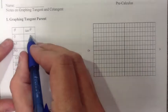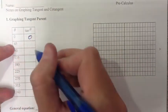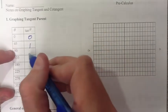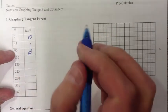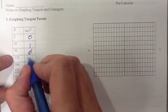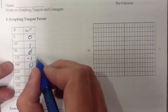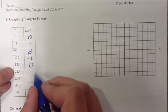Tangent of 0 is 0, tangent of 45 degrees, which is π/4, is 1. Tangent at 90 degrees is undefined. Tangent at 135 degrees is negative 1, and at 180 degrees we're back to 0.